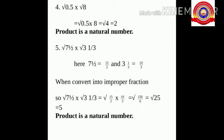The last sub-question: square root of 7 and 1/2 into square root of 3 and 1/3. Here, 7 and 1/2 equals 15 by 2, and 3 and 1/3 equals 10 by 3 as improper fractions. So the expression equals square root of (15/2 into 10/3), which is square root of 150 by 6, equal to square root of 25, which is 5 because 25 is a perfect square. Hence the product is a natural number.